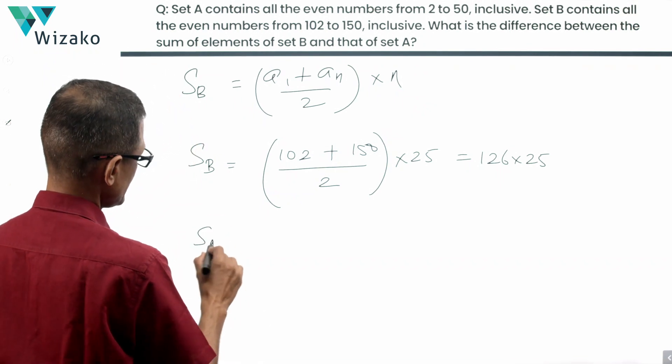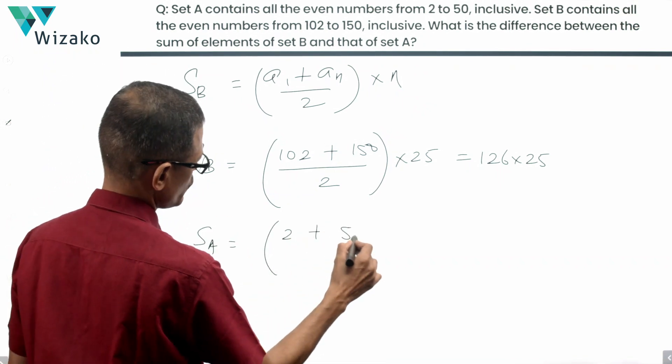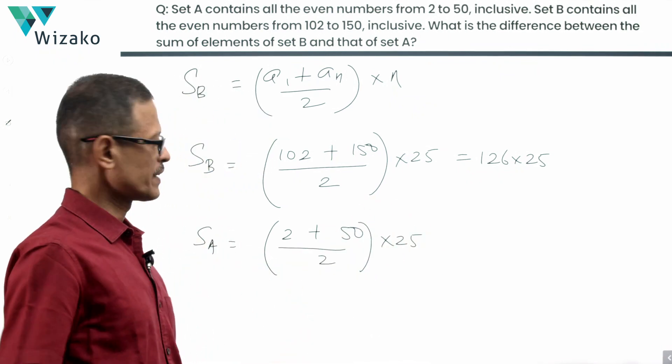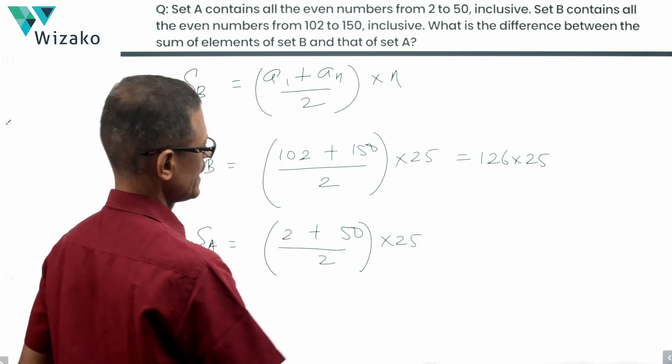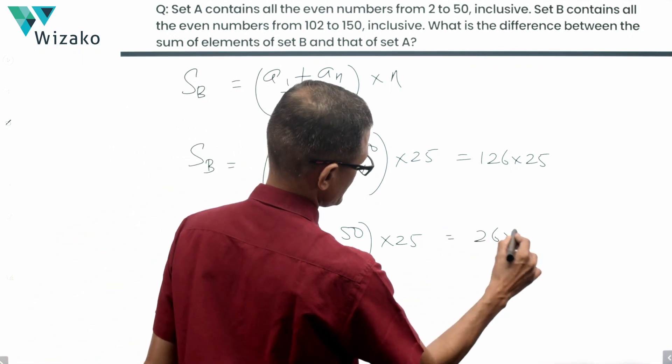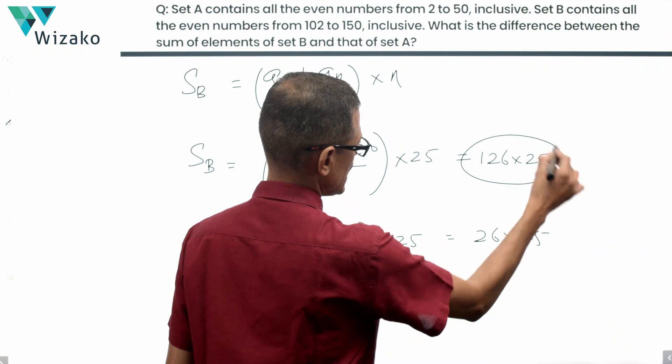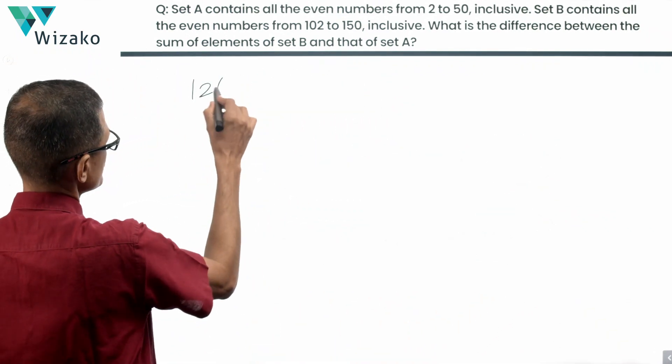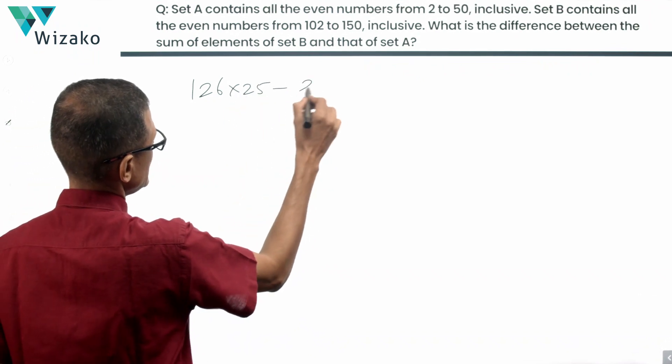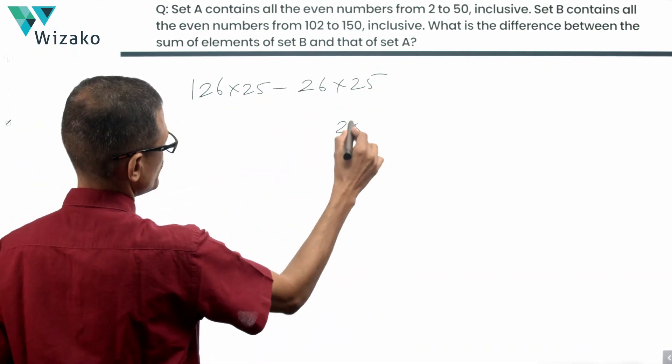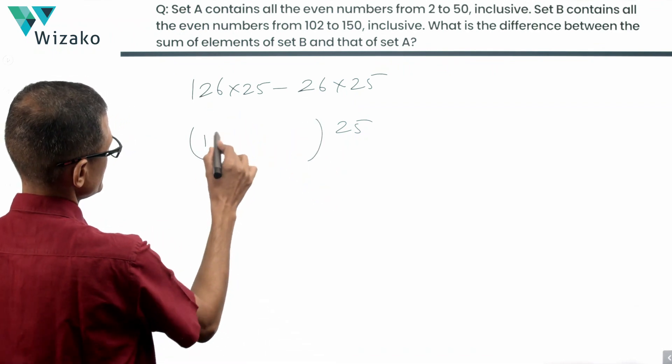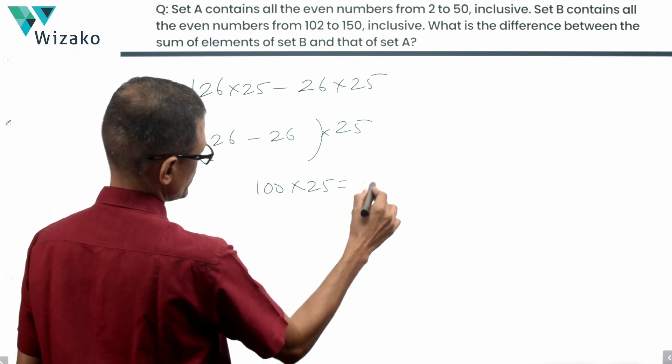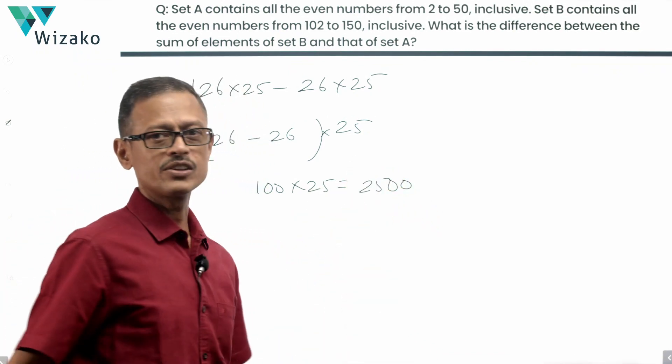Sum of elements of set A is equal to first term 2, last term 50 divided by 2 into again the same 25 terms. This is 52 by 2 which is 26. This is equal to 26 times 25. This value minus this value is what we need to find out. So 126 times 25 minus 26 times 25. Take 25 common between the first and the second term. That makes it 126 minus 26, which is 100 times 25, equal to 2500 that we arrived at using the first method.